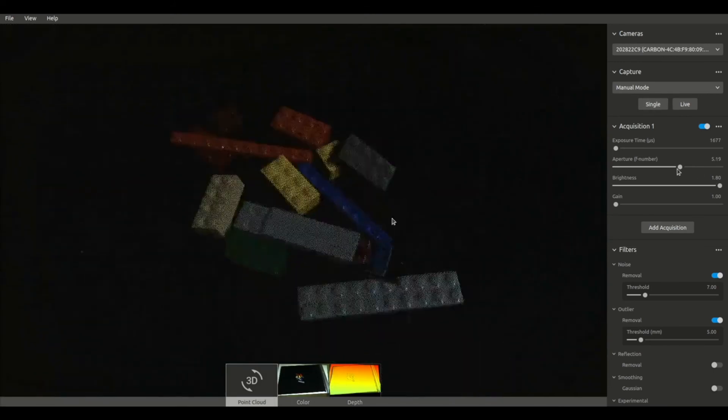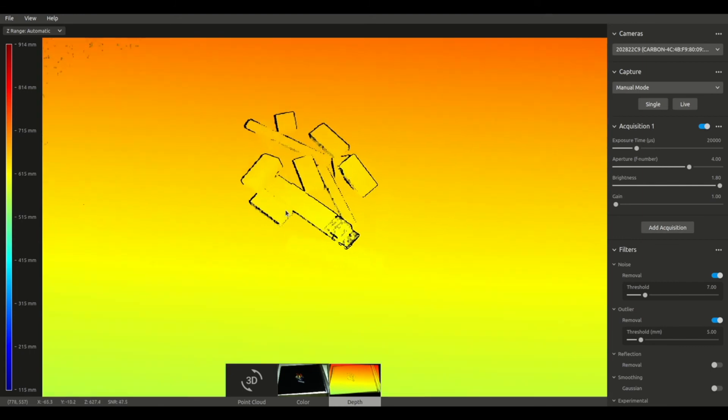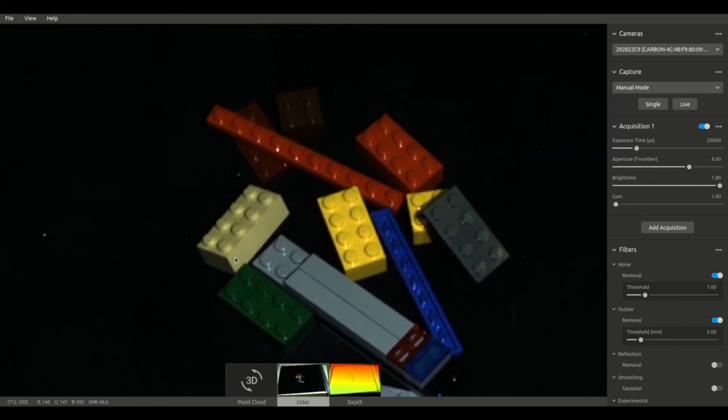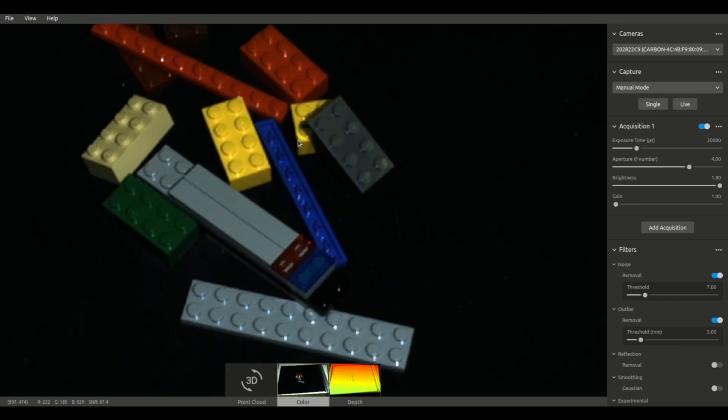Another great option for getting good quality out of your scenes is to use the HDR function that Zivid Studio has. Then with two captures, we are almost guaranteed to get all the image quality we need.